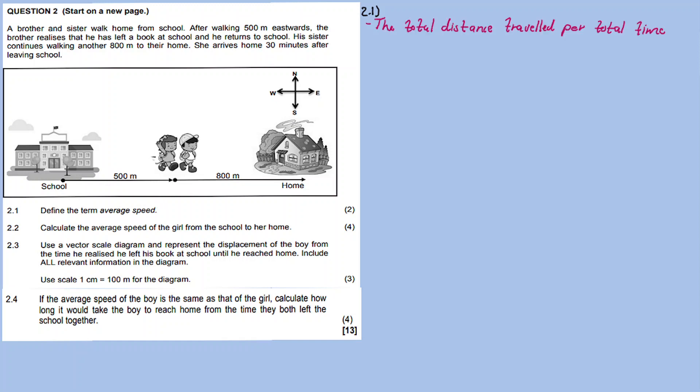The definition: average speed is the total distance traveled per unit total time. It's the total distance traveled divided by the total time.